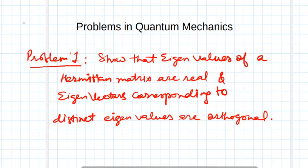Welcome to this new series. I am going to start a new series in which I will solve certain problems of quantum mechanics. Starting with the problem: we have to show that eigenvalues of a Hermitian matrix are real, and eigenvectors corresponding to distinct eigenvalues are orthogonal.